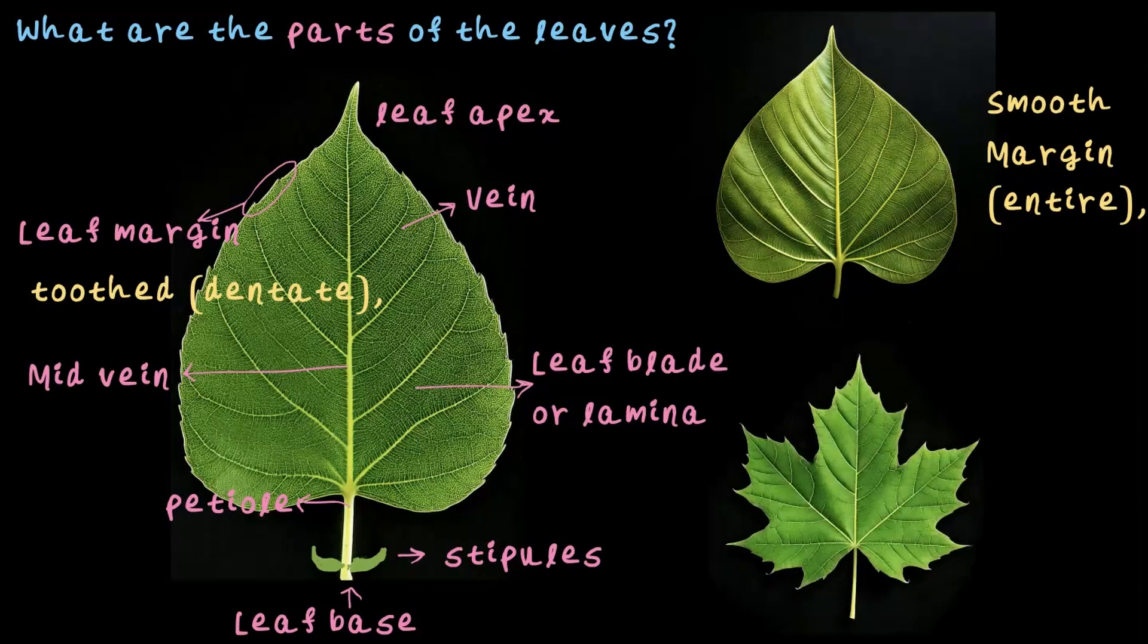Here is another one that is lobbed margin. This is a maple leaf and this is how the margin of the leaf looks like. They have lobes pointing outwards. It's not tooth, it's not smooth. This type is called lobbed margin. So that's the different types of leaf margin that you can find in leaves.